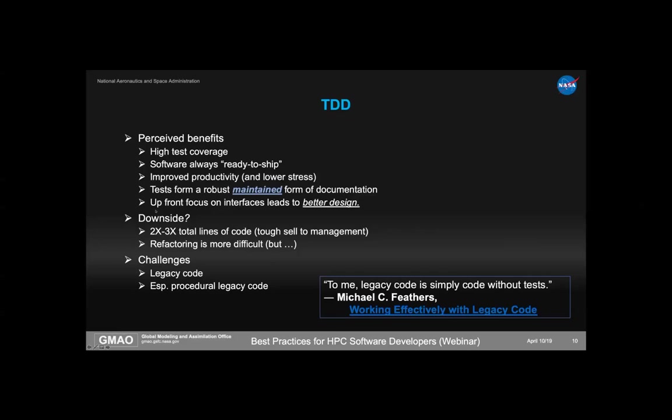The downside is that TDD can be hard to sell to management — you're talking about two or three times more lines of code since you write at least as much test code as production code. Some complain that refactoring is harder because you're changing twice as much code. But practitioners argue back: refactoring without tests is so risky, how could you even imagine doing it? This leads to a quote by Michael Feathers, who has essentially defined legacy code as code without tests.